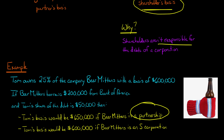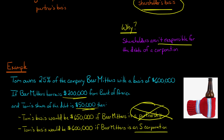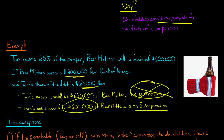The partnership's debts increase by $200,000, Tom's share is $50,000, so Tom's basis goes from $600,000 to $650,000. If Beer Mittens is an S corporation and not a partnership, Tom's basis is going to be unchanged — it's going to remain at $600,000.